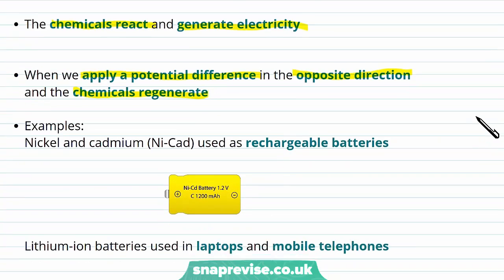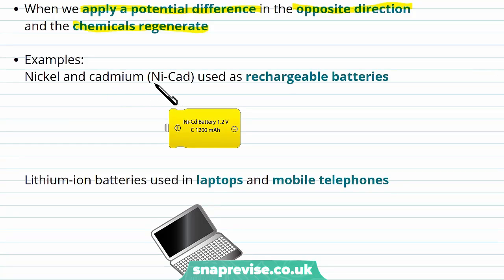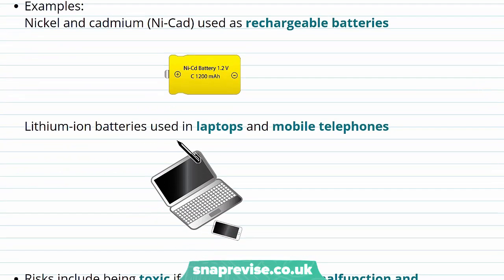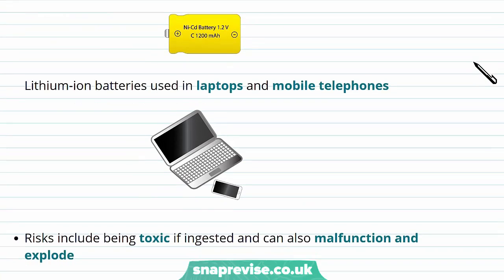Some examples of this include nickel and cadmium batteries, usually shown as NiCad, and these are used as rechargeable batteries in things like remote controls and toys. Lithium-ion batteries are lightweight, and they are used in laptops and mobile telephones.